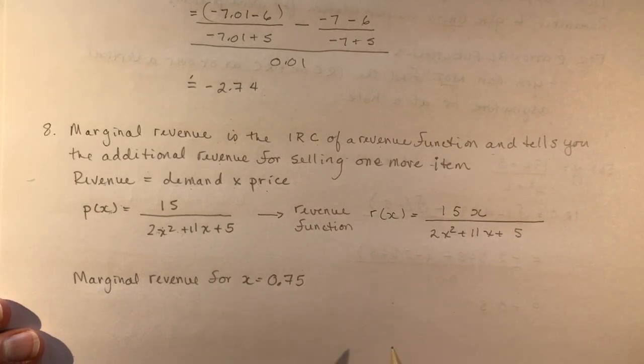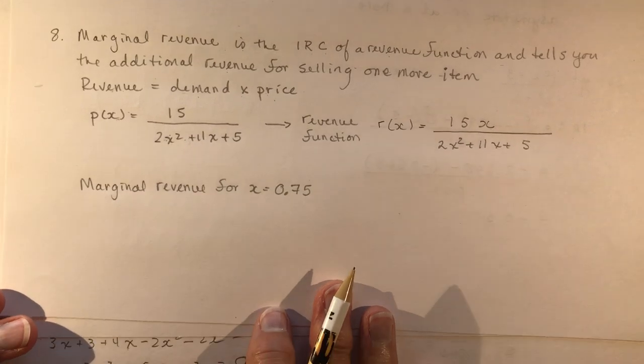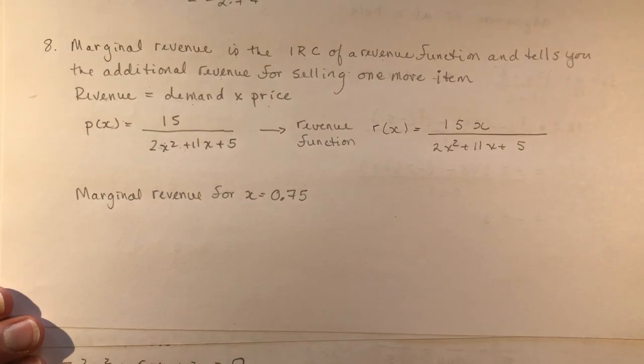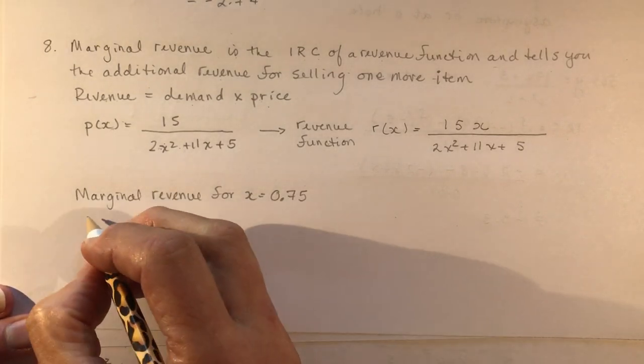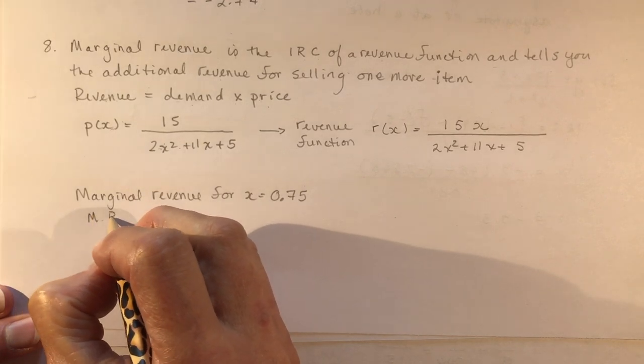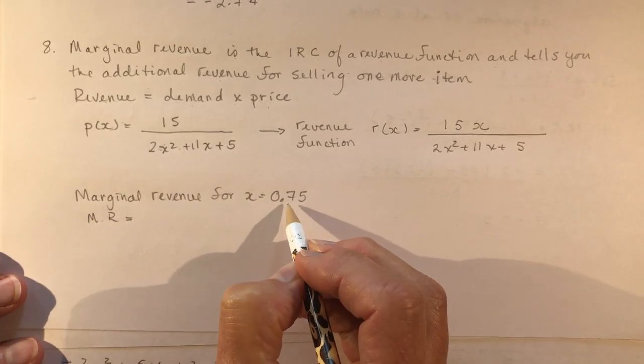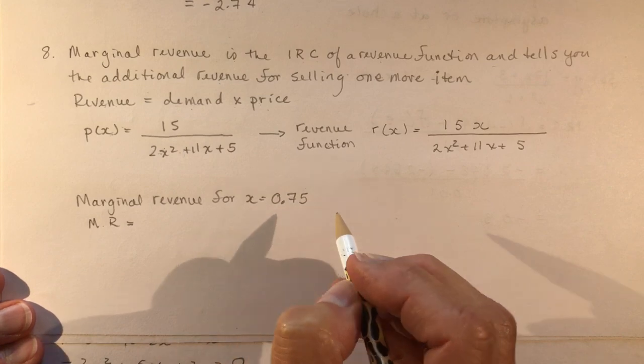And now what is the marginal revenue when X is 0.75? So I'm going to have to plug all this into my equation. Don't forget the numerator and the denominator. So we'll say marginal revenue equals, and I'm going to use a 0.001 interval.